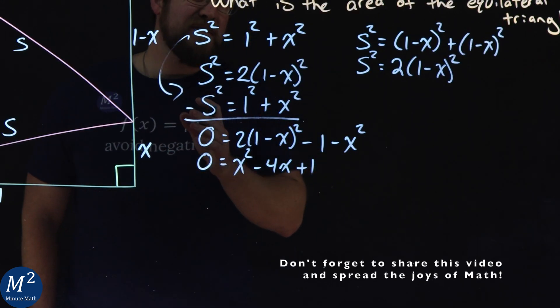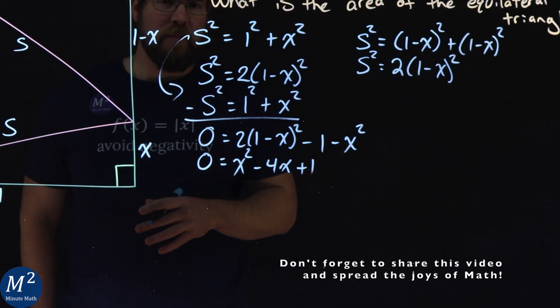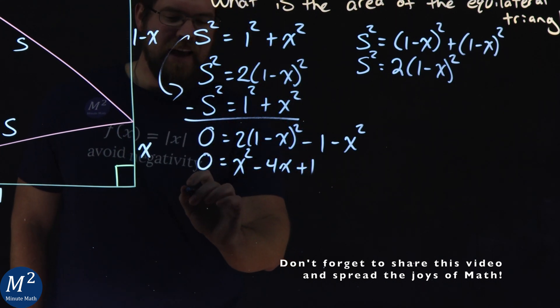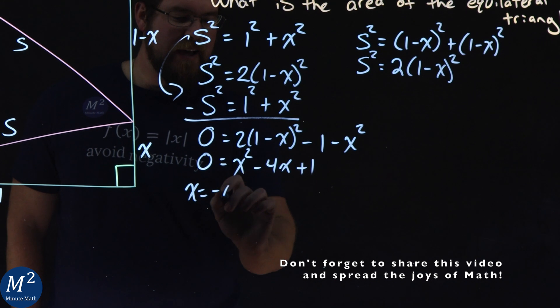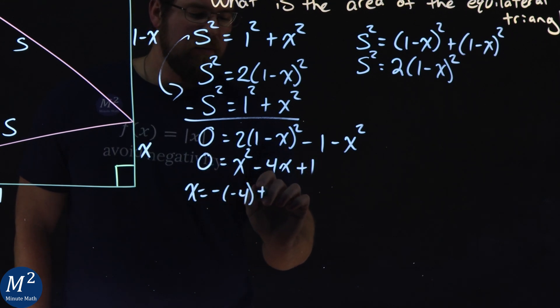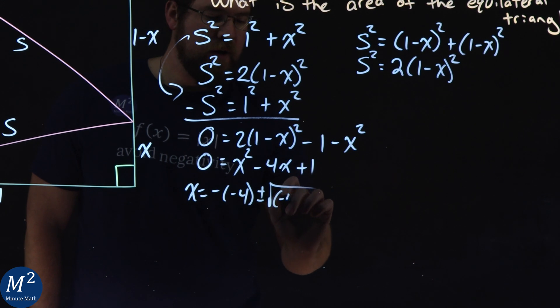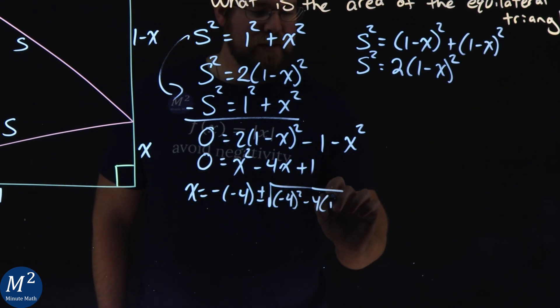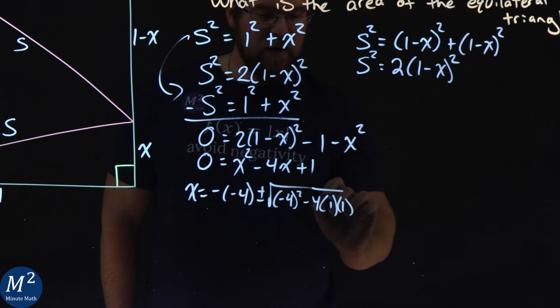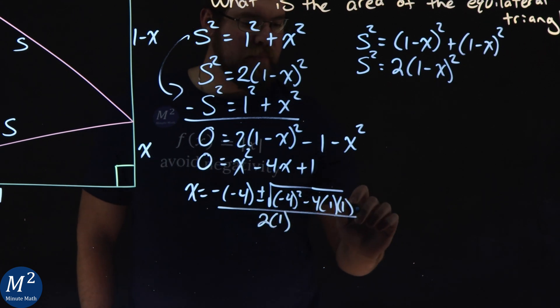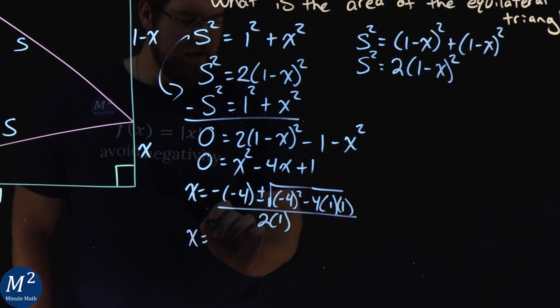So from here, we want to solve for X. And I did the work for you. We use the quadratic formula. And X equals negative B, so B value is 4, plus or minus the square root of B squared, 4 squared minus 4 times a, which is 1, times c, which is also 1, all over 2 times a, which is 1.